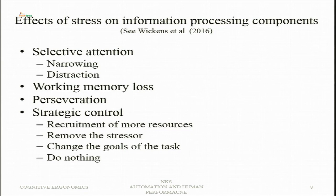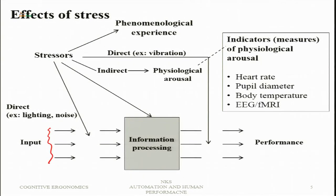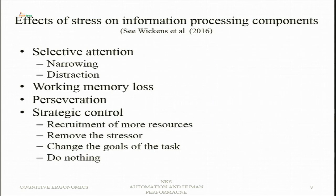Strategic control is possible to address these effects. One strategy is recruitment of more resources — bring in more resources by taking away resources from a secondary task and allocating them to the primary task. Another strategy is to remove the stressor — for example, in the physical environment, stressors in the form of ambient conditions or mechanical vibrations can be removed, thereby reducing stress.